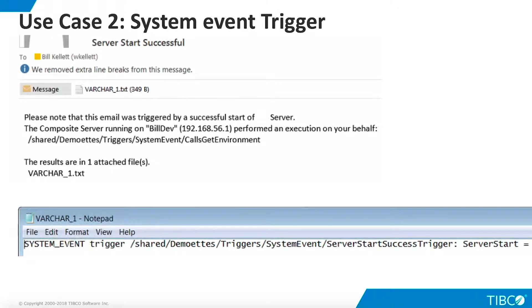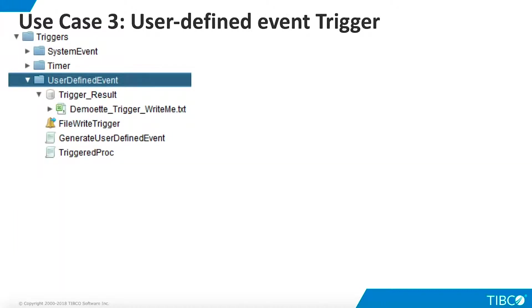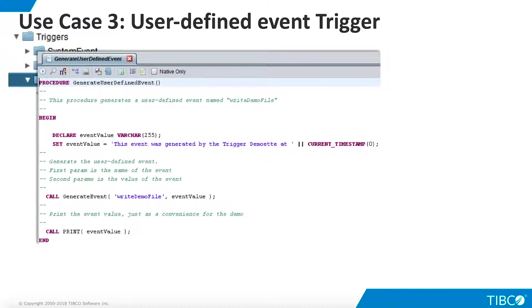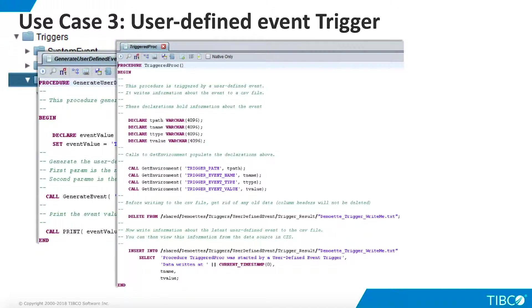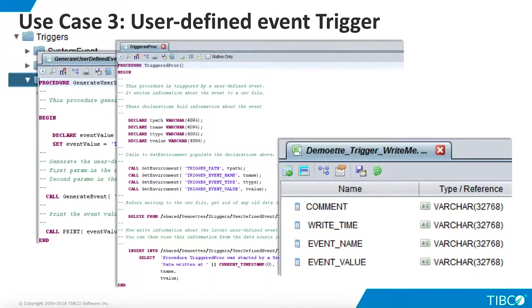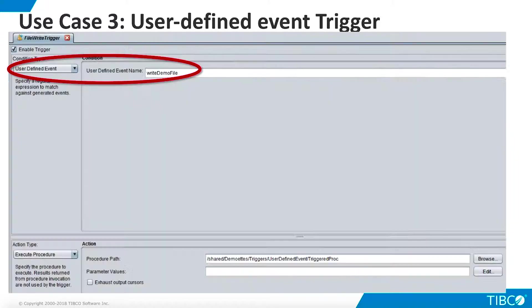For our final use case, we want to create a user-defined event that will call TDV to write a data file. To prepare this use case, we have built a procedure that creates the user-defined event. A second procedure will respond to this event and write the data file. We have also created a data source that defines the data file. Now we define the trigger. Our Condition Type is a user-defined event named Write Demo File. For Action Type, we choose Execute Procedure and select the procedure that writes the data file.